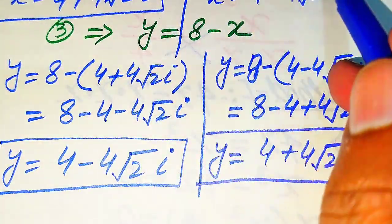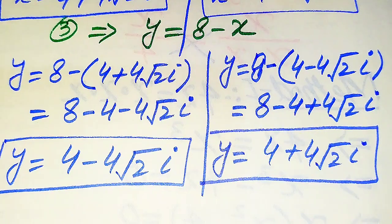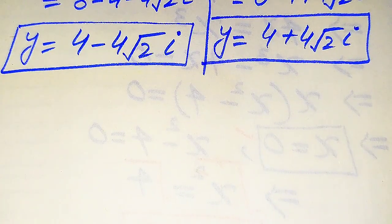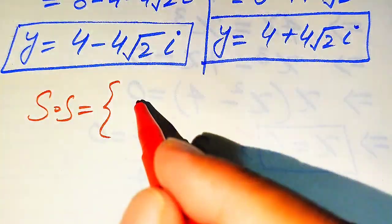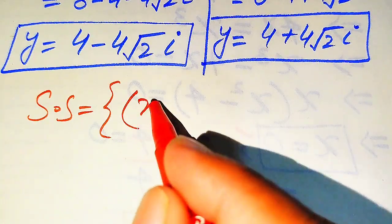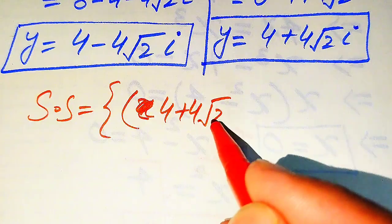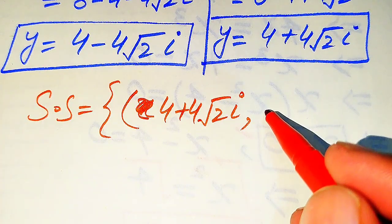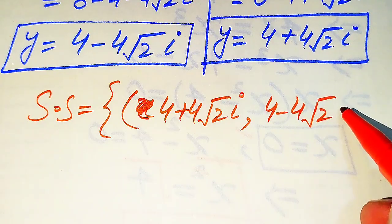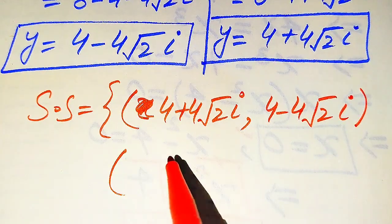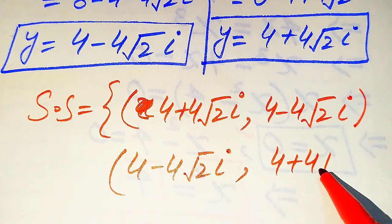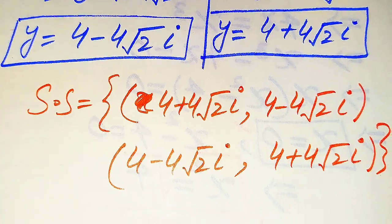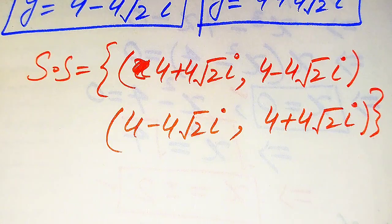Finally, the solution set of the given question has two solution pairs. The first solution set is x equals to 4 plus 4 root 2 iota and corresponding y equals to 4 minus 4 root 2 iota. The second solution is x equals to 4 minus 4 root 2 iota and y equals to 4 plus 4 root 2 iota. This is our final answer. Thank you so much for watching this video — please subscribe to my channel for more exciting videos.